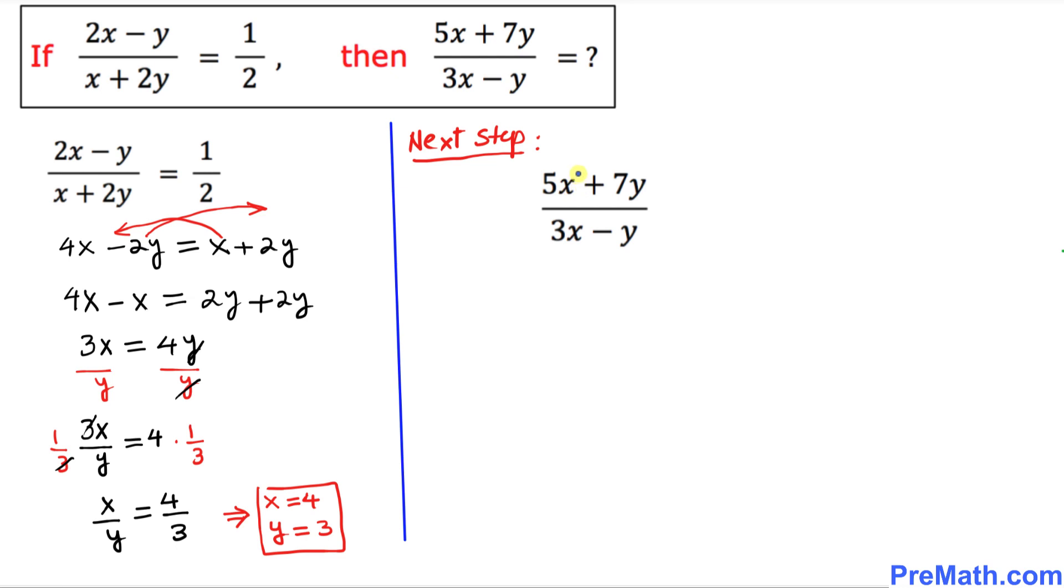Now in the next step, we evaluate (5x + 7y)/(3x - y). We figured out our x and y values, so we'll substitute x = 4 and y = 3. This gives us (5×4 + 7×3)/(3×4 - 3).